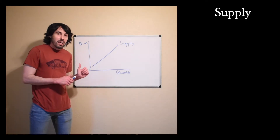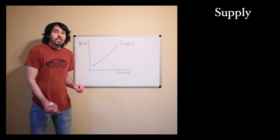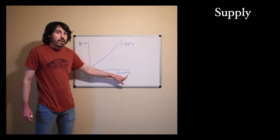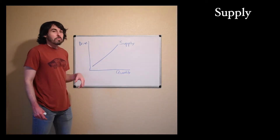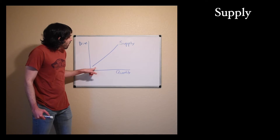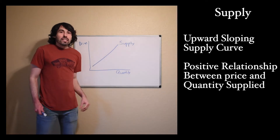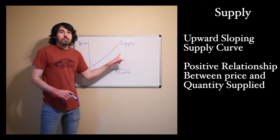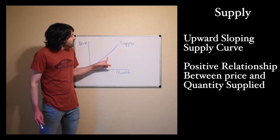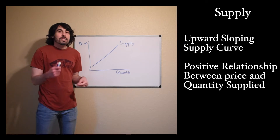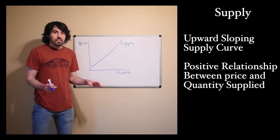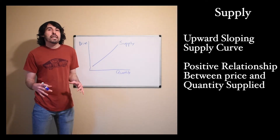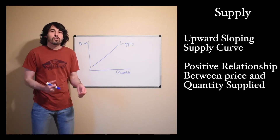Just like the demand curve that I taught you in the last video, the supply curve is going to go on the same graph. Our x-axis is still going to be quantity, our y-axis is still going to be price, except now our supply curve will be upward sloping. There is a positive relationship between price and quantity supplied — as price increases, quantity supplied increases as well. That's because suppliers are going to be your producers, the people and businesses that make products or provide some sort of service.